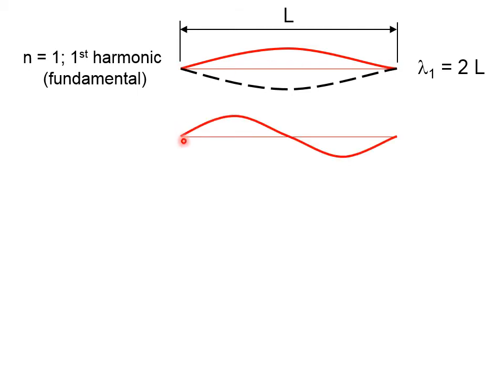If we shake the end of that string up and down a little bit faster, but at a particular frequency, we get a second standing wave, where here we have three nodes. This point in the middle and these points at the end essentially don't move. And we have two antinodes.